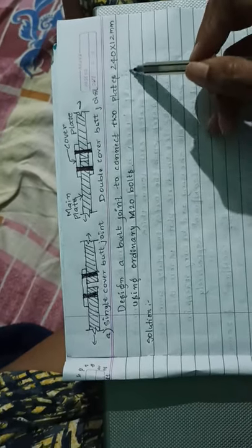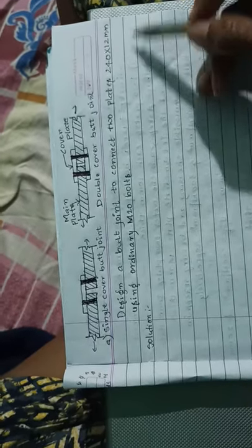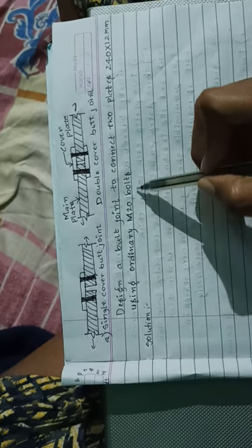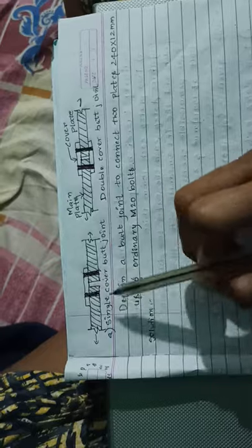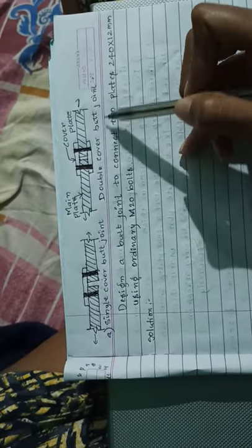Design a butt joint to connect two plates, 240 by 12 mm, using ordinary M20 bolts. A butt joint will look like this: this is a single cover butt joint, and this is a double cover butt joint.